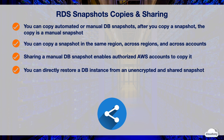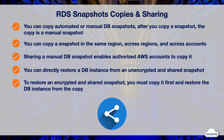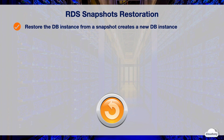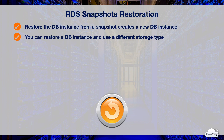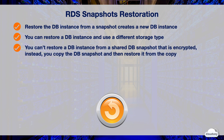You can directly restore a DB instance from an unencrypted shared snapshot. To restore an encrypted shared snapshot, you must copy it first and restore the DB instance from the copy. When restoring a DB instance from a snapshot, you cannot restore to an existing DB instance — instead, you create a new DB instance. If you want to use the same name as the existing DB instance, you must first delete or rename the existing one. You can restore a DB instance using a different storage type than the source snapshot, though this process is slower due to the additional work required to migrate data to the new storage type. You cannot restore a DB instance from a shared encrypted snapshot directly; instead, make a copy and restore from the copy.